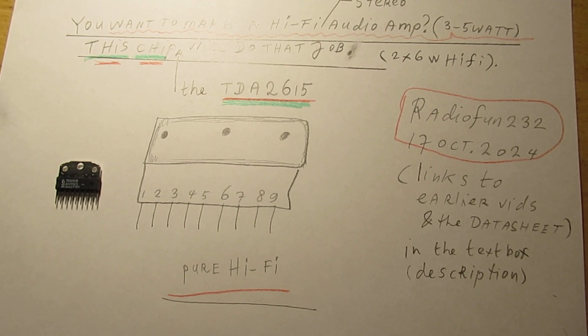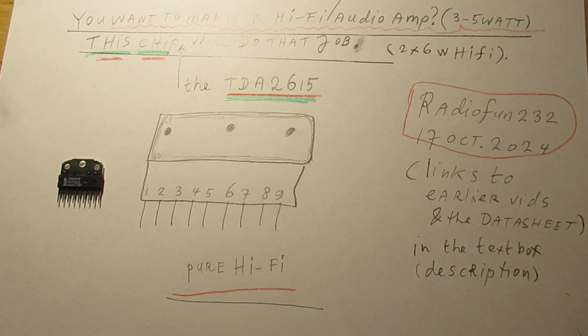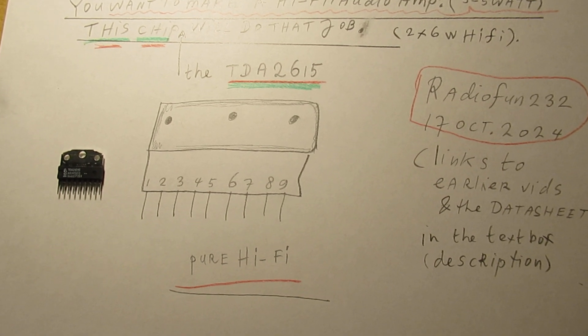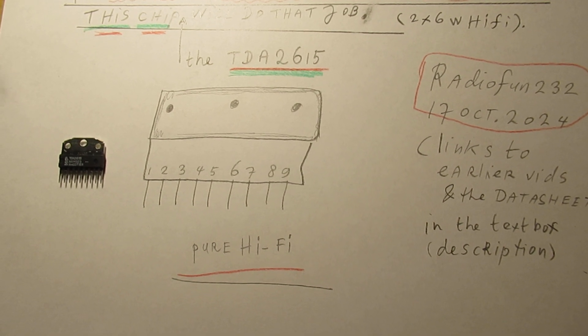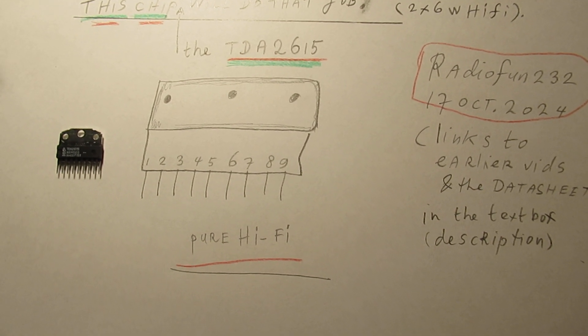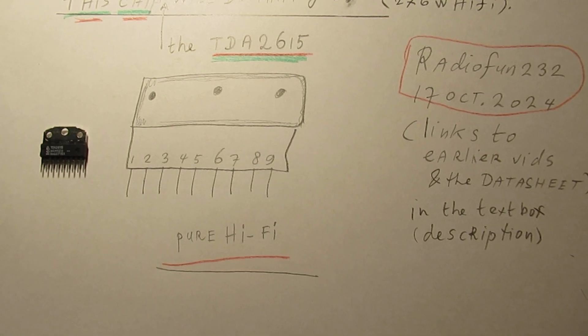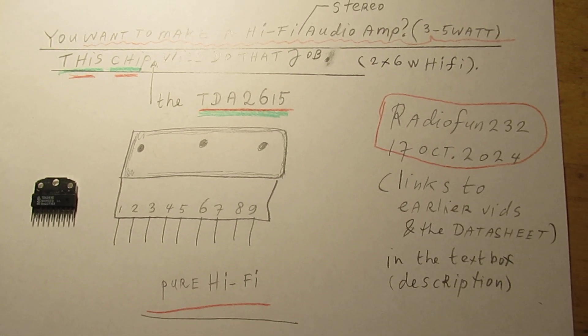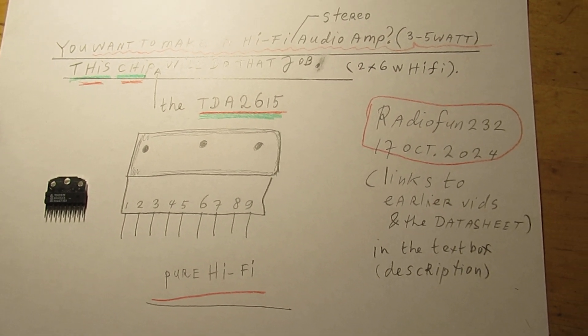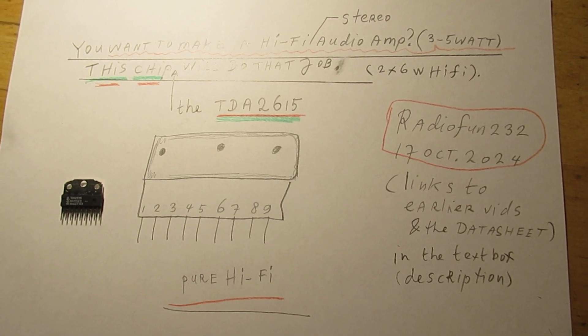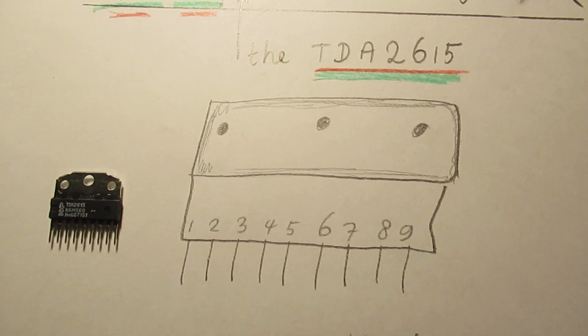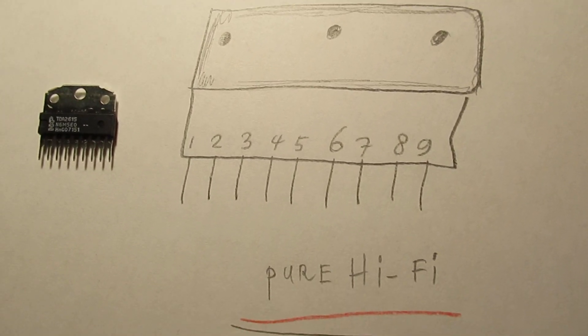When you want to make an audio amplifier, a stereo amplifier, this is the best circuit that I can give in this situation. Say approximately 2 times 6 watts. It's a very useful chip.